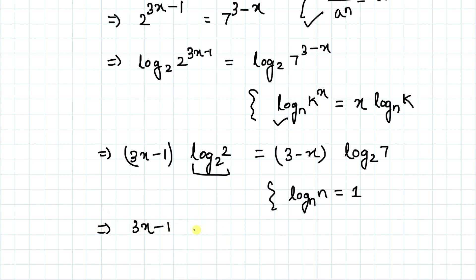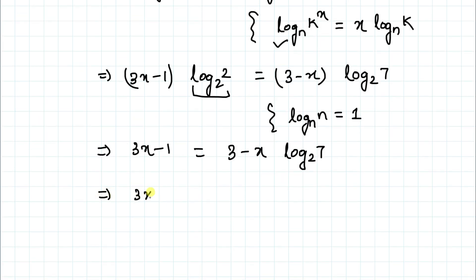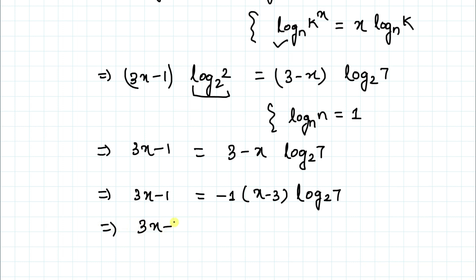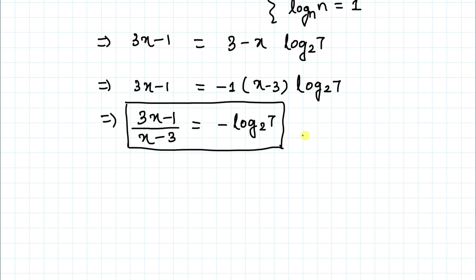From 3x − 1 equals (3 − x) log₂7, we rearrange to get x log₂7 on one side. By cross multiplication, we can write (3x − 1) divided by (x − 3) equals minus log base 2 of 7. And that is exactly what we were asked to find — the value of (3x−1)/(x−3) — so the answer is minus log base 2 of 7.